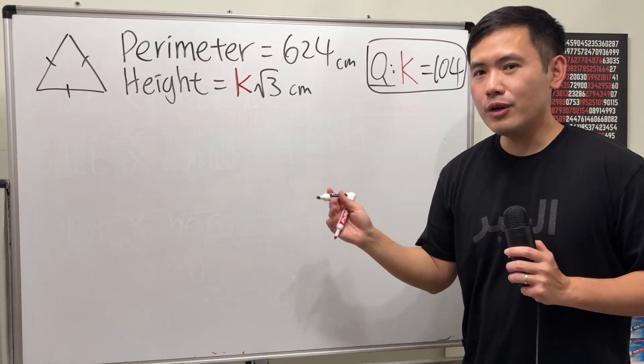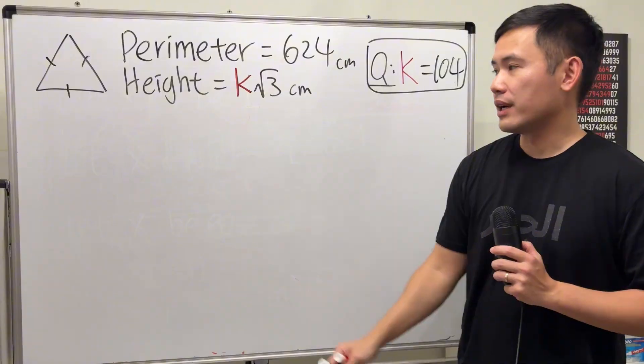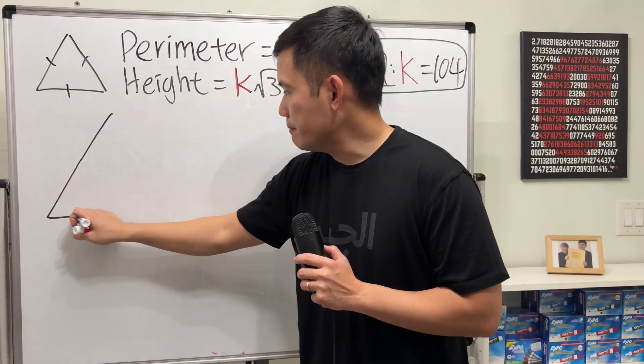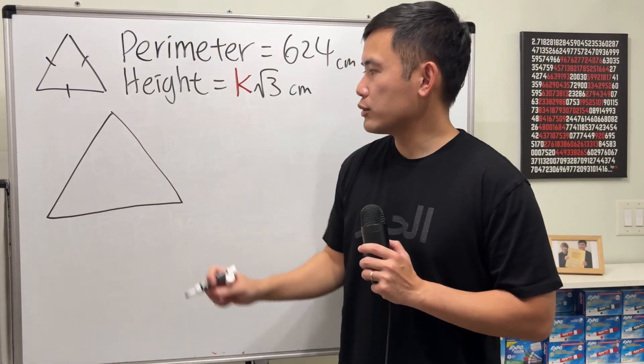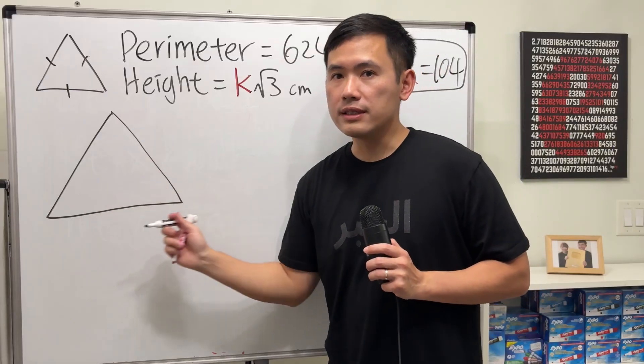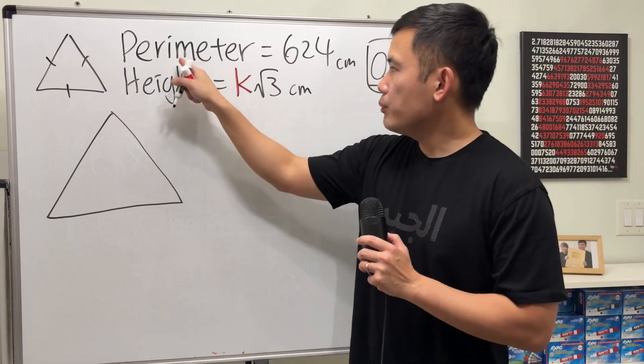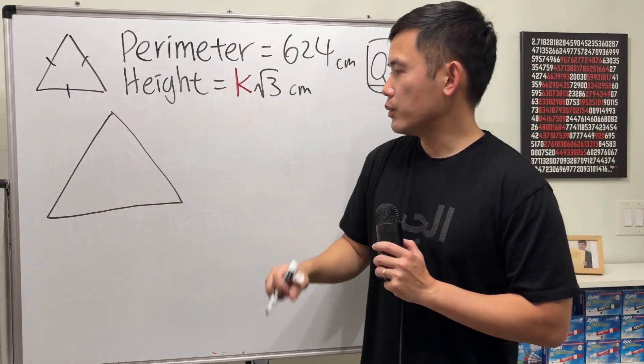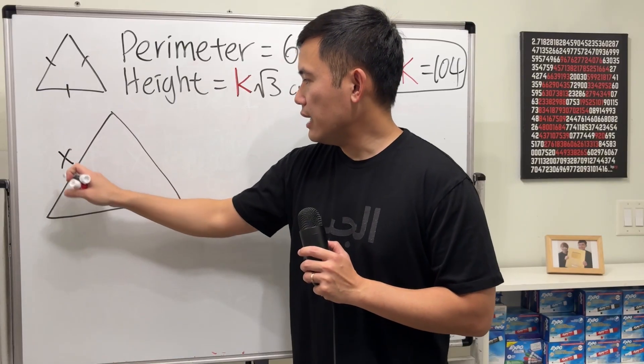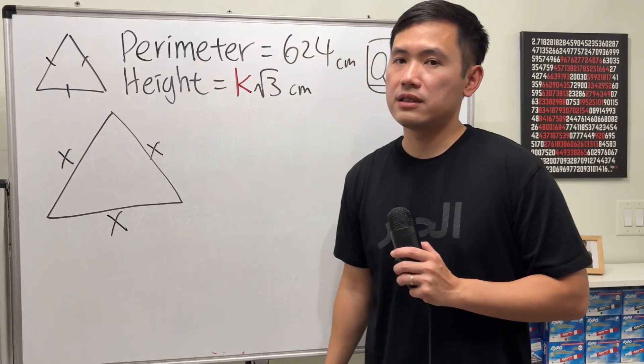Well, let's see what do we know about an equilateral triangle. So right here, whenever we have an equilateral triangle, we know that all the sides are equal, and we also know the perimeter, so we do this. If we call this x, this will also be x, and this will also be x.